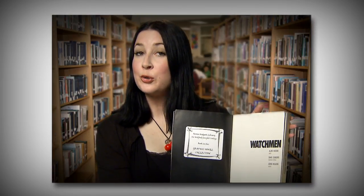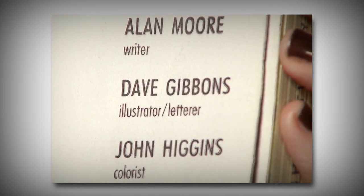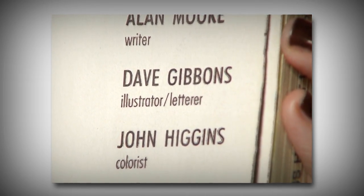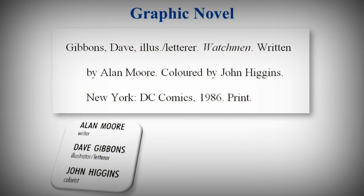If you are doing an art history paper and comparing different drawing styles, Dave Gibbons might be the most relevant to your research. Then you would begin the citation with his name, followed by the label illustrator/letterer. After the title, you would write "written by Alan Moore."